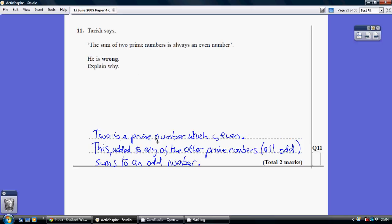Well, two is a prime number. This is the key point here. Every other prime number is odd.